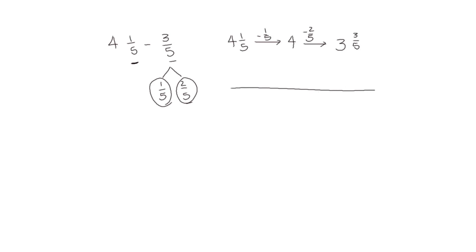We can show that on a number line also. We're starting at 4 and 1 fifth. First we're subtracting 1 fifth, and then we're subtracting 2 fifths, and we end up here at 3 and 3 fifths.